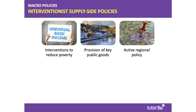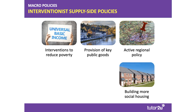Governments may feel that the supply side potential of the economy is being held back by big regional differences in employment, productivity, and incomes. So an active regional policy designed to bolster supply side capacity and investment in underperforming regions could be key. Likewise, the market mechanism left to itself may under-supply housing, so the government may increase spending and investment in social housing as a way of boosting supply side capacity in the housing sector.